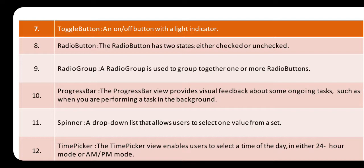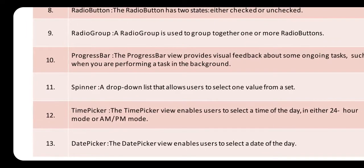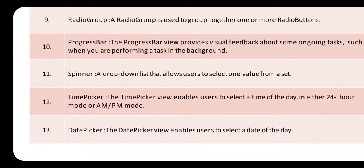Next is the Spinner — a drop-down list that allows the user to select one value from a set. Next is the TimePicker — the TimePicker view enables the user to select a time of the day in either 24-hour mode or AM/PM mode.